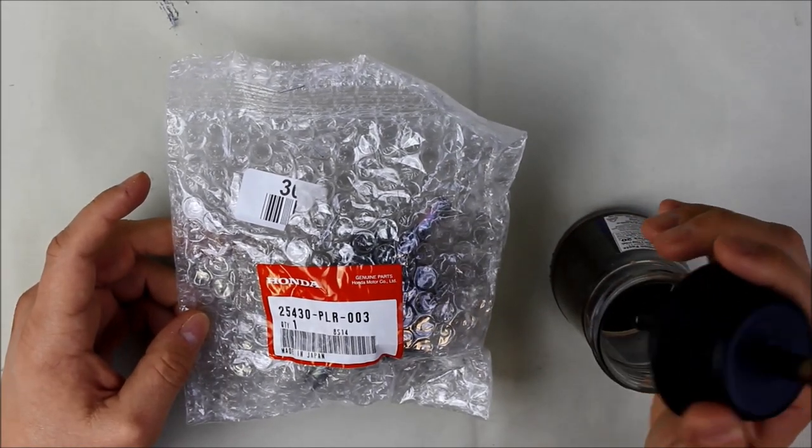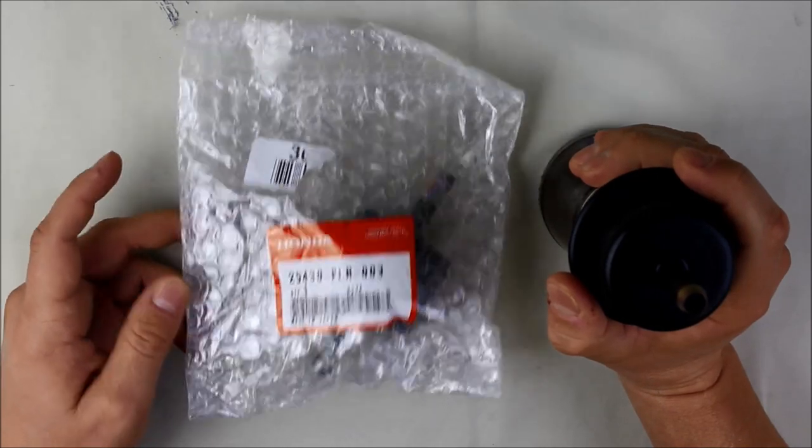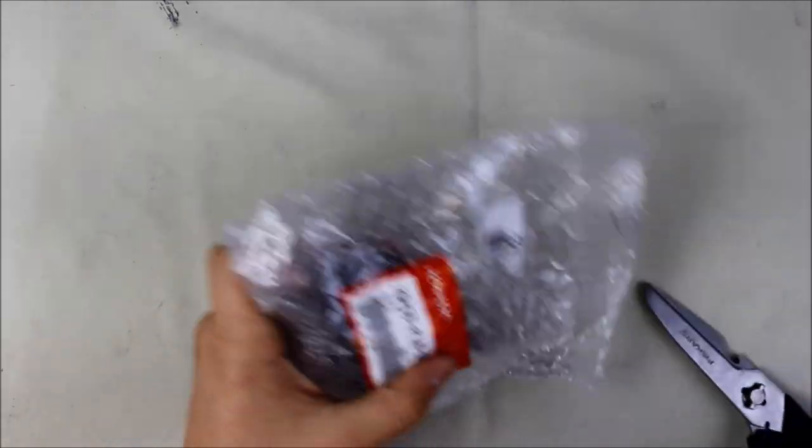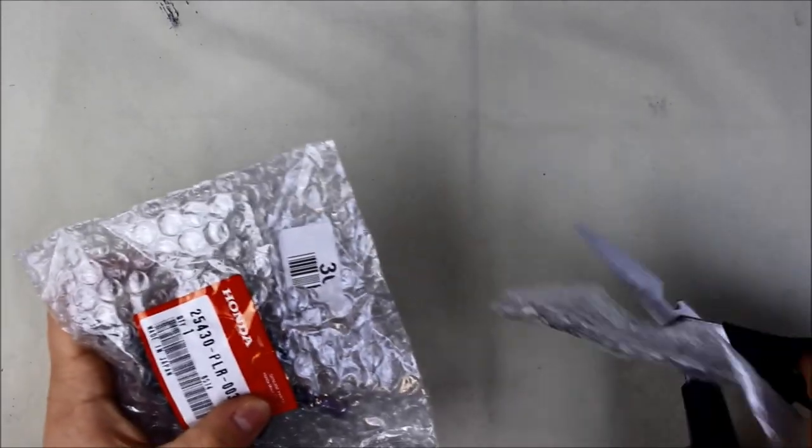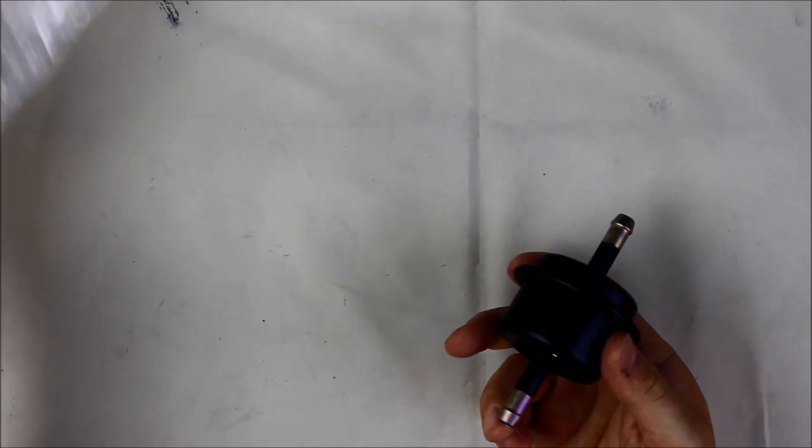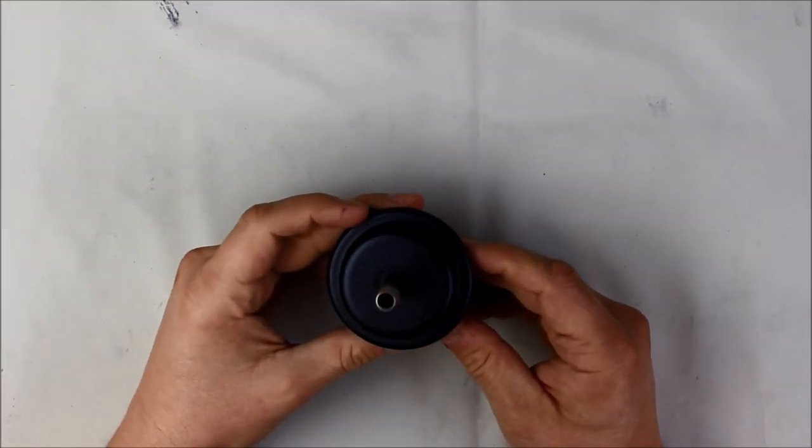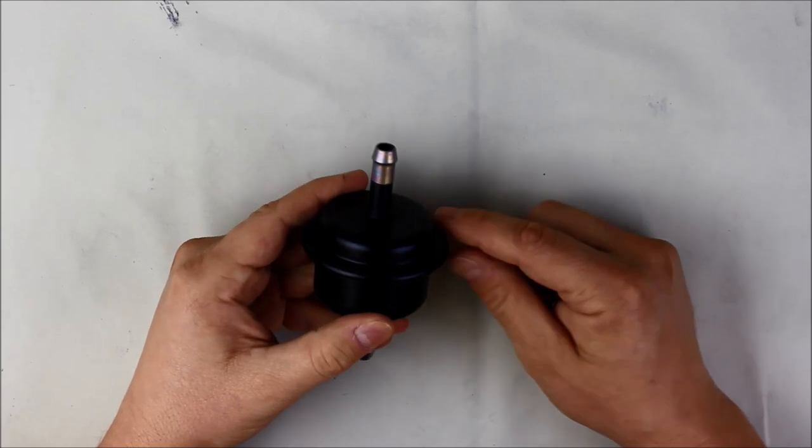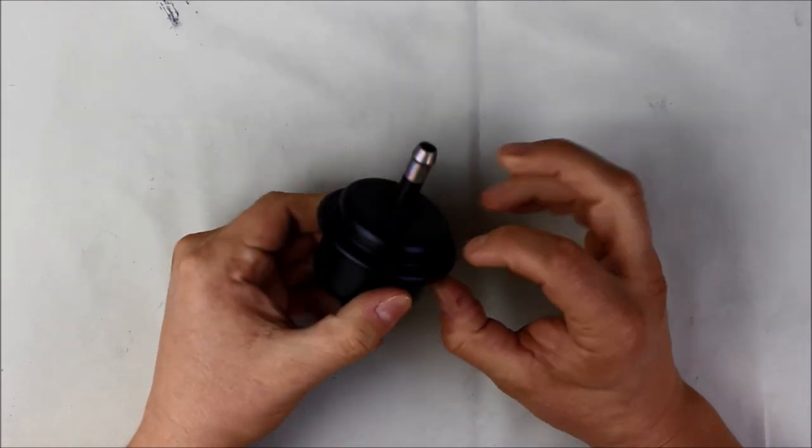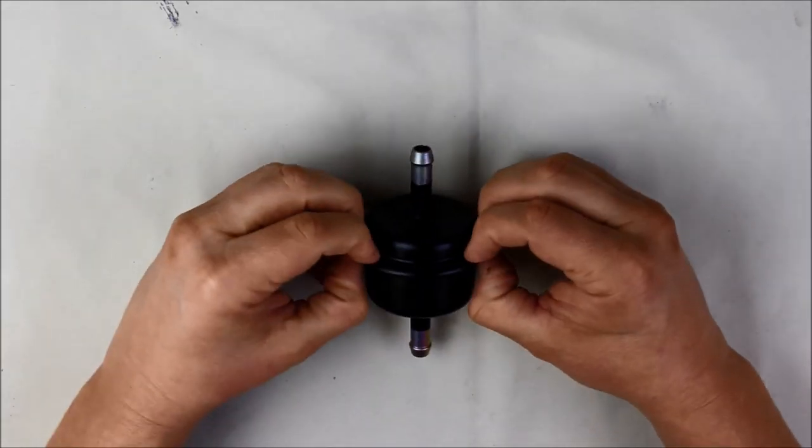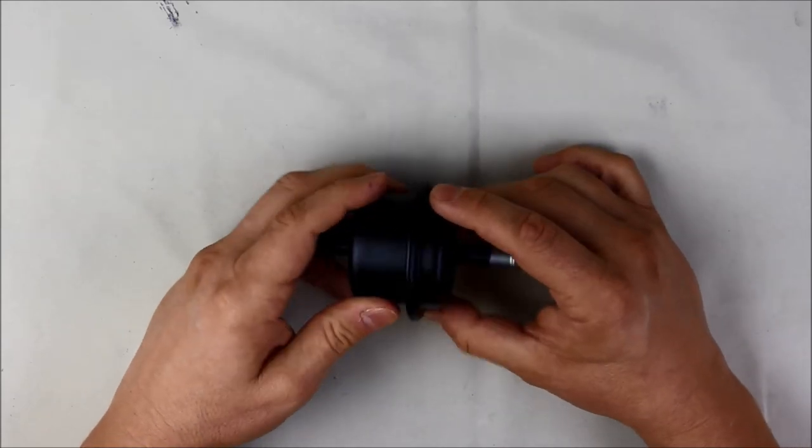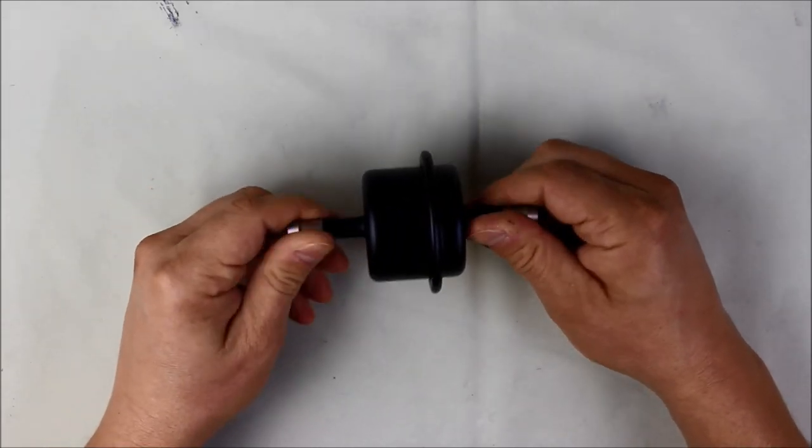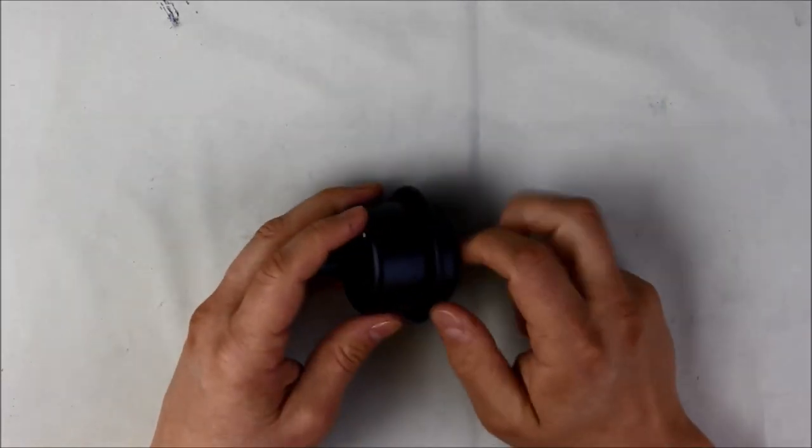First thing we're going to do is get this new filter opened up. What I was thinking about doing originally was getting a cutting wheel and cutting around this lip, but then I realized this is just kind of a pinch hold. My theory is if I just take a grinder and grind around this edge, it should separate pretty easy.